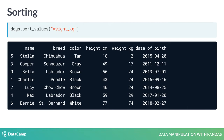You can sort rows using the sort_values method, passing in a column name that you want to sort by. For example, when we apply sort_values on the weight kilograms column of the dogs data frame, we get the lightest dog at the top, Stella the Chihuahua, and the heaviest dog at the bottom, Bernie the St. Bernard.